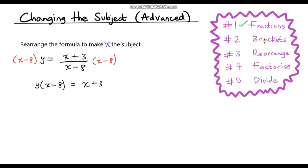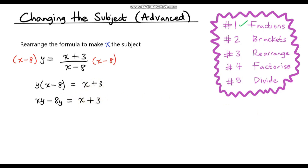Step number two: deal with any brackets. You won't always have brackets, but in this situation I do have a pair of brackets, so I'm going to expand them. y multiplied by x is just yx or xy — I always like to do things in alphabetical order. And then y times negative 8 is negative 8y. So I've expanded my brackets. On the right hand side we've still got x plus 3. I'm just going to tick step number two.